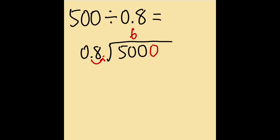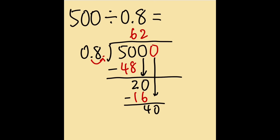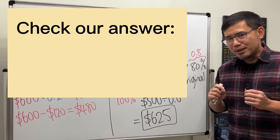8 goes into 50 six times. 6 times 8 is 48, then subtract — 50 minus 48 is 2. Bring down the zero: 8 goes into 20 two times. 2 times 8 is 16, subtract to get 4. Bring down the zero: 8 goes into 40 five times. 5 times 8 is 40, remainder is zero. So the answer is 625.